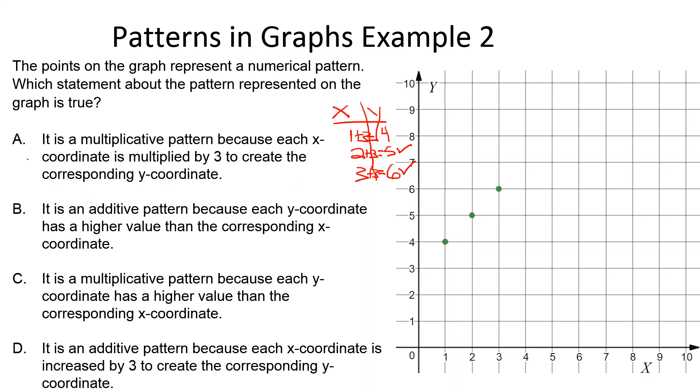Reading through the answer choices, we notice that A says multiplicative pattern, so it cannot be A. We notice C also says multiplicative pattern, so it cannot be C. Let's see if it's B: It is an additive pattern because each y coordinate has a higher value than the corresponding x coordinate. This is true, all of our y values are bigger than our x values. I'm going to put a question mark.